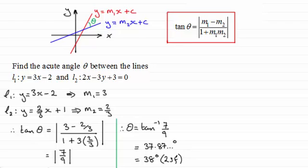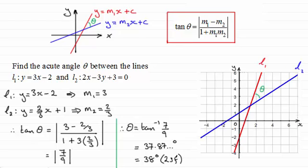And if you were to draw this out accurately, it would look something like this. And you should be able to see that that angle theta that we've just worked out certainly looks about 38 degrees. You can measure it with a protractor if you like.